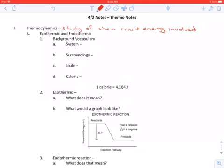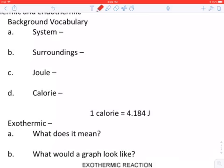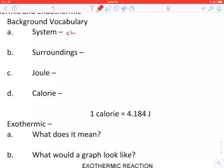So just jumping right in, we're going to get some background vocabulary out of the way first. And that background vocabulary is starting with system. System is where the chemical reaction is taking place. So this is the only place that the chemical reaction is actually taking place. We're talking about the particles actually reacting with each other.